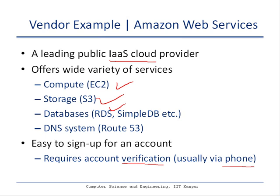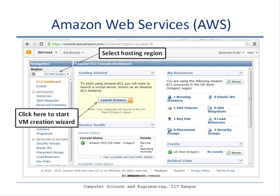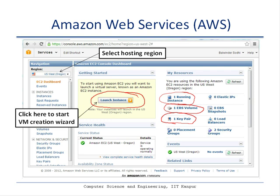Once you have your account set up and you want to launch a virtual machine on Amazon's data centers, after you are logged on to your Amazon Web Services account, you will see a screen like this. You can see that there is already one instance of a virtual machine running, attached to one elastic block storage volume, and one SSH key pair generated.